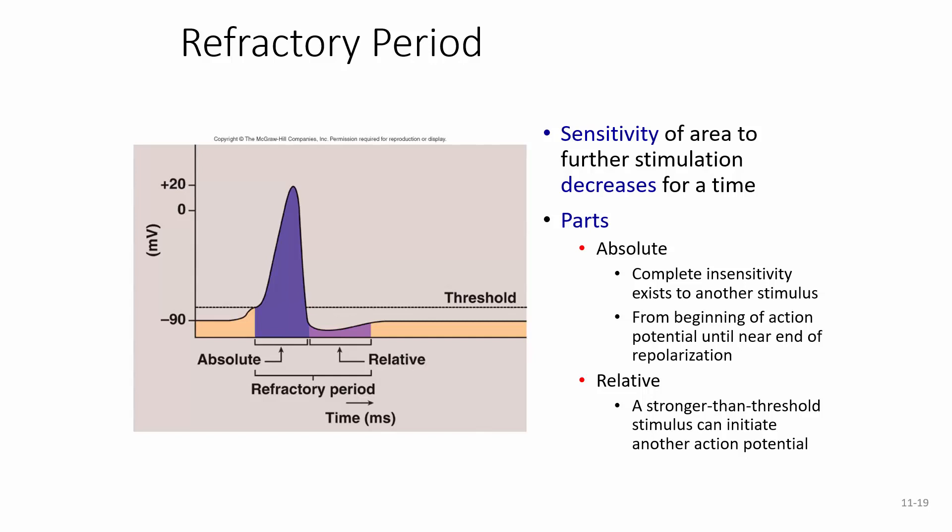That's because of what we call a refractory period — the sensitivity of an area to further stimulation is decreased for a time. The flash unit has to charge up — that's like repolarization. When you push the button and it flashes, that's depolarization. It's going to take some time until it reaches a certain amount of repolarization, or recharging, before it'll actually flash again.